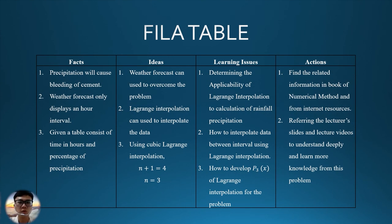Hi, my name is Wong Dong-Hang with matrix number F210112. Now I will start present the FILA Table. There are four parts in the FILA Table. First is facts. Precipitation will cause bleeding of cement. Second, weather forecast only depletes an hour interval. Third, given a table consists of time in hours and percentage of precipitation.